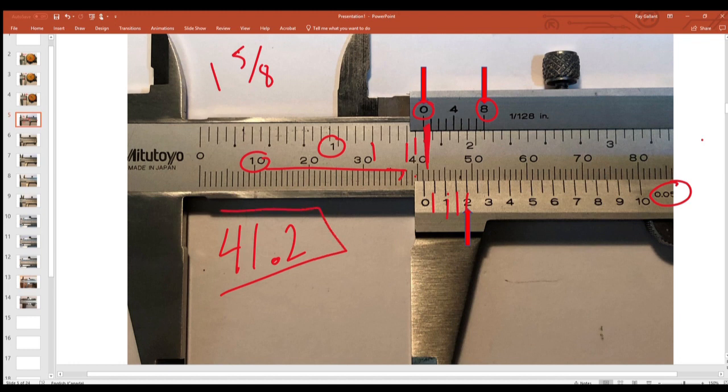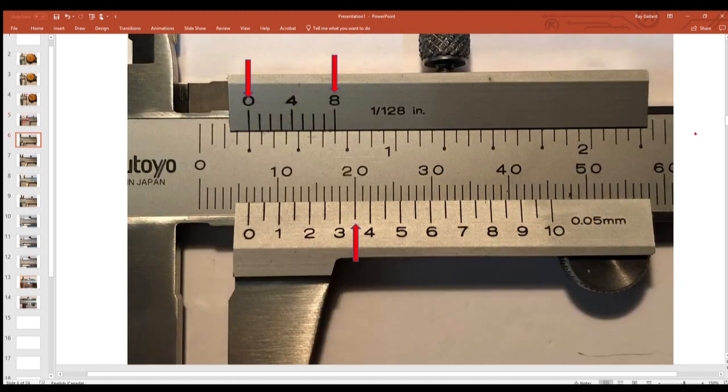Okay, let's take a look and see what we have here. We have zero, one eighth, one quarter, and these guys are both on zero lined up here. So therefore our upper scale is reading quarter of an inch.